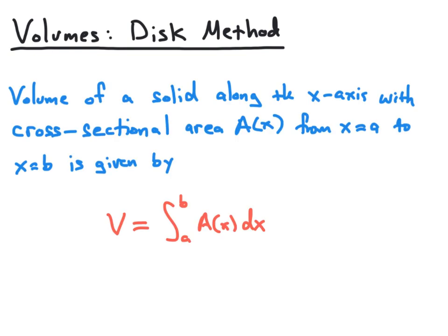Suppose we have a solid that lies along the x-axis between the values of x equal a and x equal b. If we know the cross-sectional area for every x value between a and b, and we can call that cross-sectional area the function A of x,